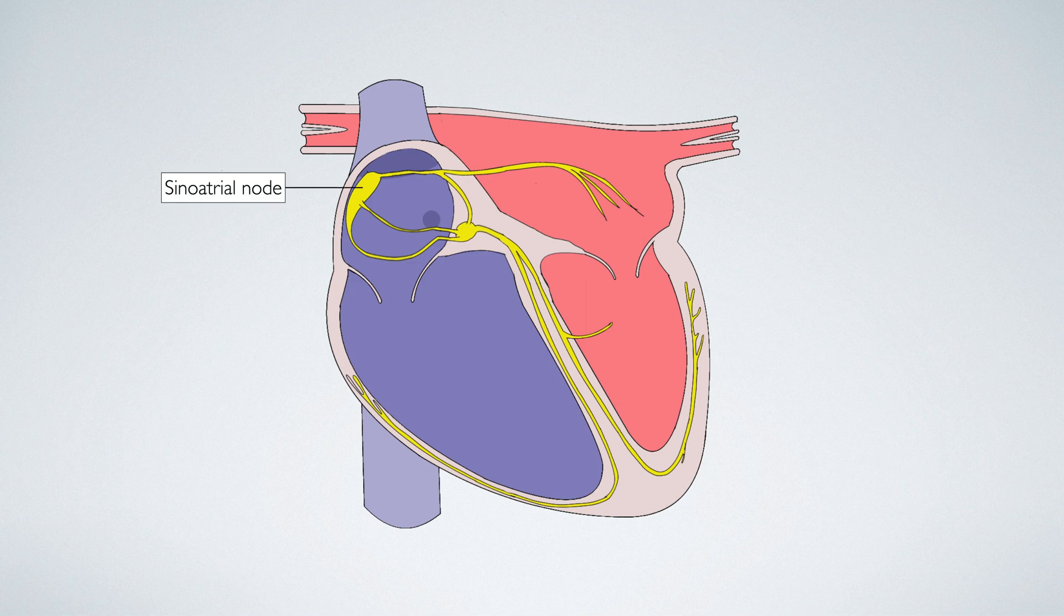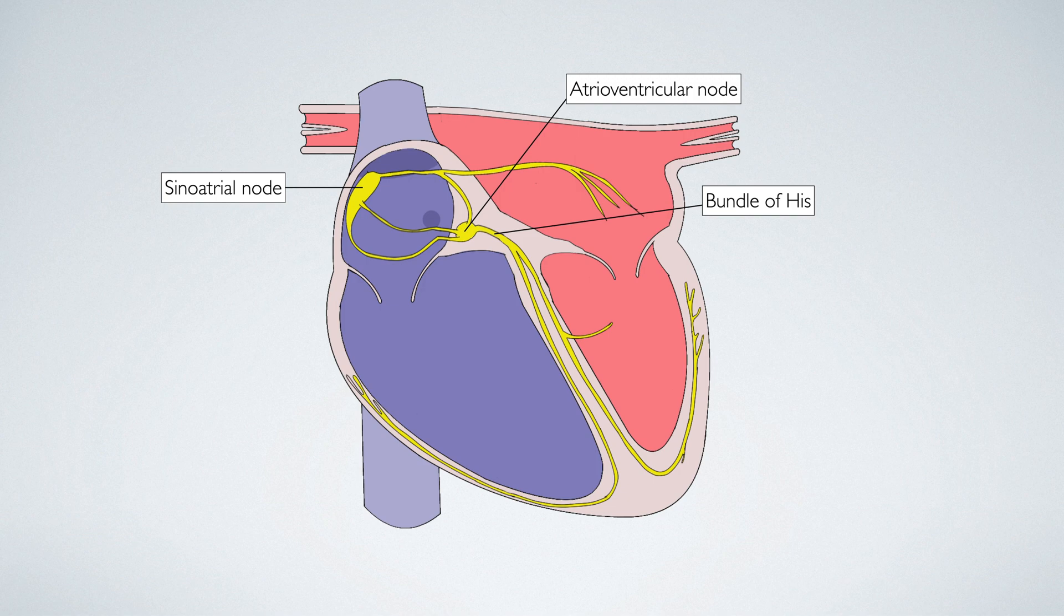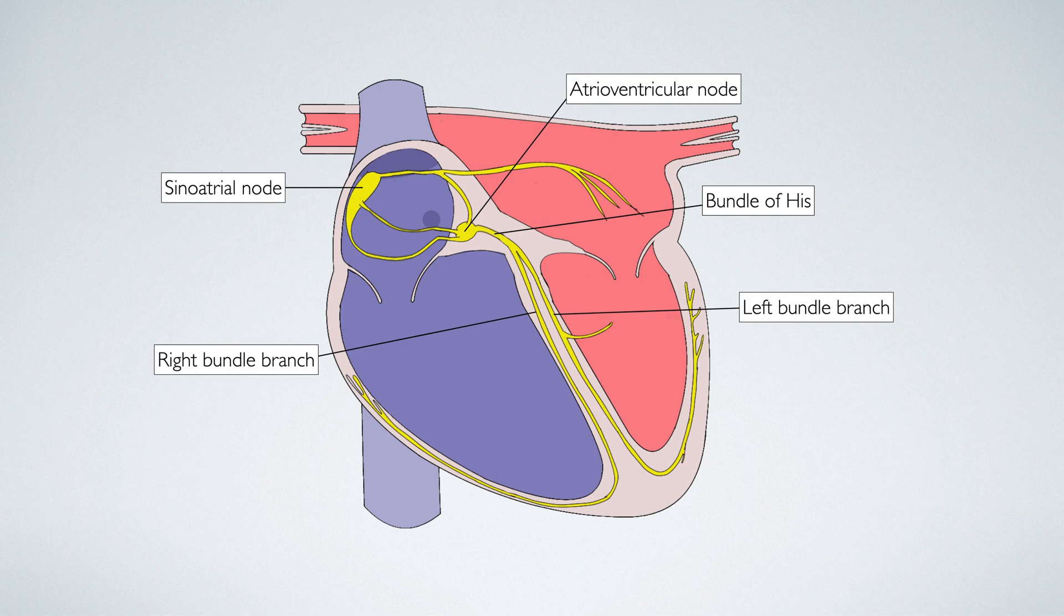The sinoatrial node is located in the right atrium. The atrioventricular node, otherwise known as the AV node, is located in the interatrial septum. The AV node is connected to the bundle of Hiss, and this divides into the left and right bundle branch. The left and right bundle branches run the full length of the interventricular septum. And as they enter into the ventricles, the branches divide into Purkinje fibres.